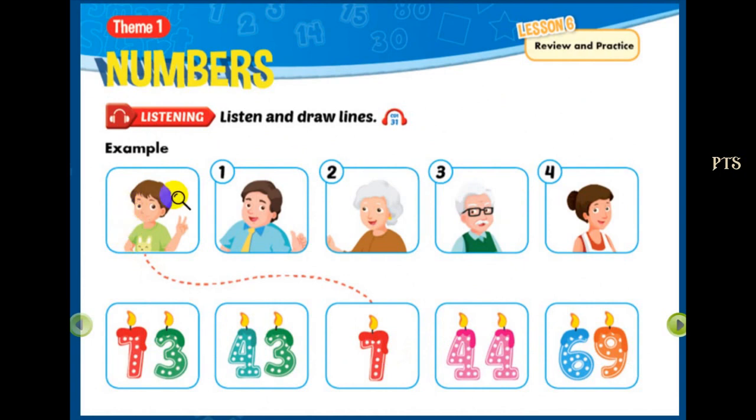There is one example. Who's he? He's Tom. How old is he? He's 7 years old. 7? Yeah, that's right. Can you see the line? This is an example.